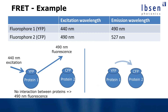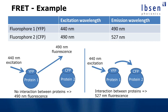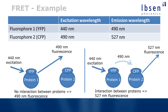In the second case, the proteins have moved close to each other. When excited with 440 nanometer light, instead of emitting at 490 nanometers, the energy is transferred to the CFP, and the CFP when excited by 490 nanometers will emit at 527 nanometers. So when the molecules are close together and interacting, we see 527 nanometer fluorescence. This is a very simple way of measuring whether the molecules are exchanging energy or not: fluorescence at 490 means no interaction; fluorescence at 527 means energy transfer.